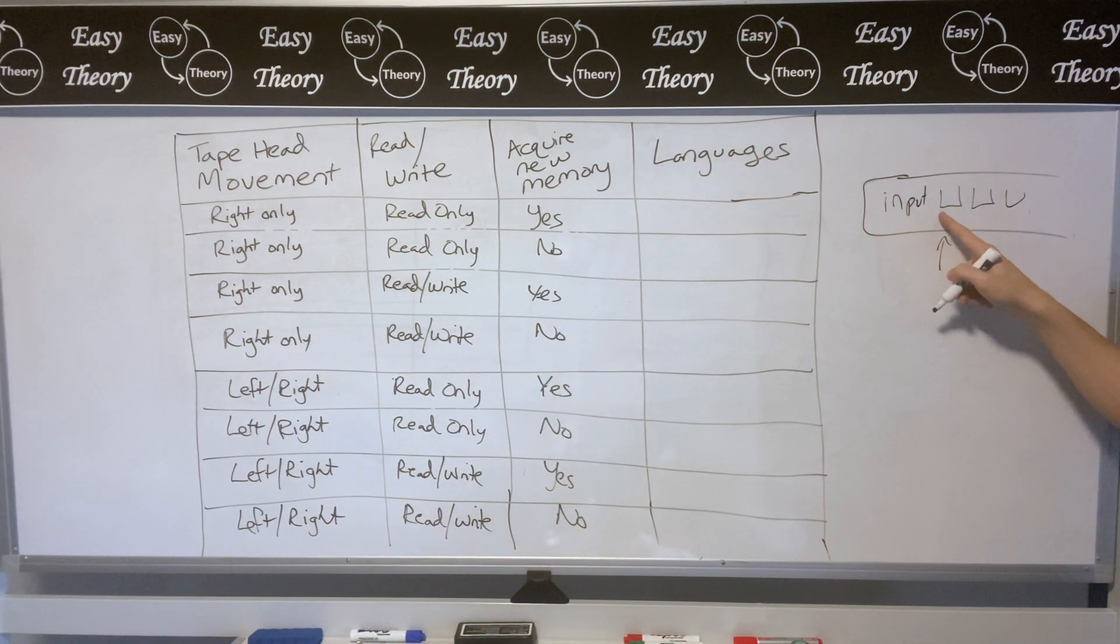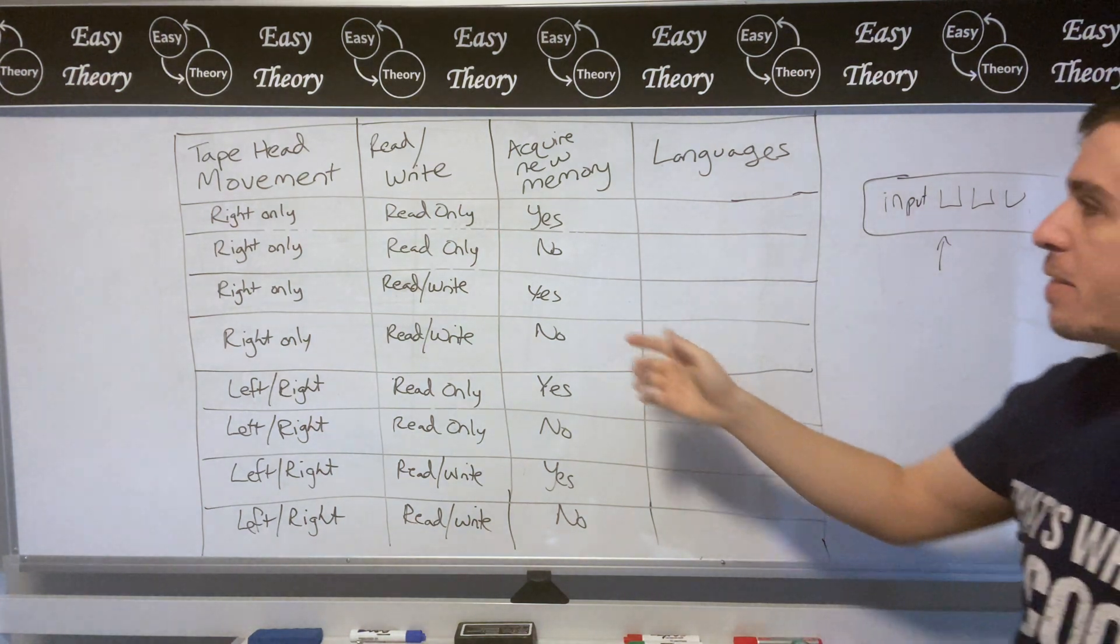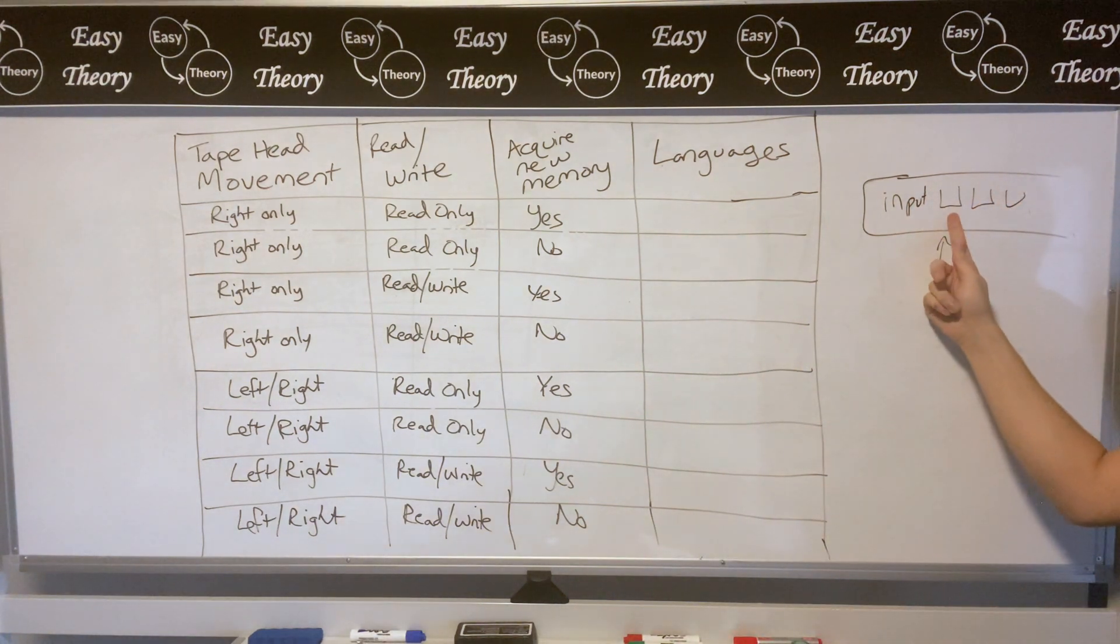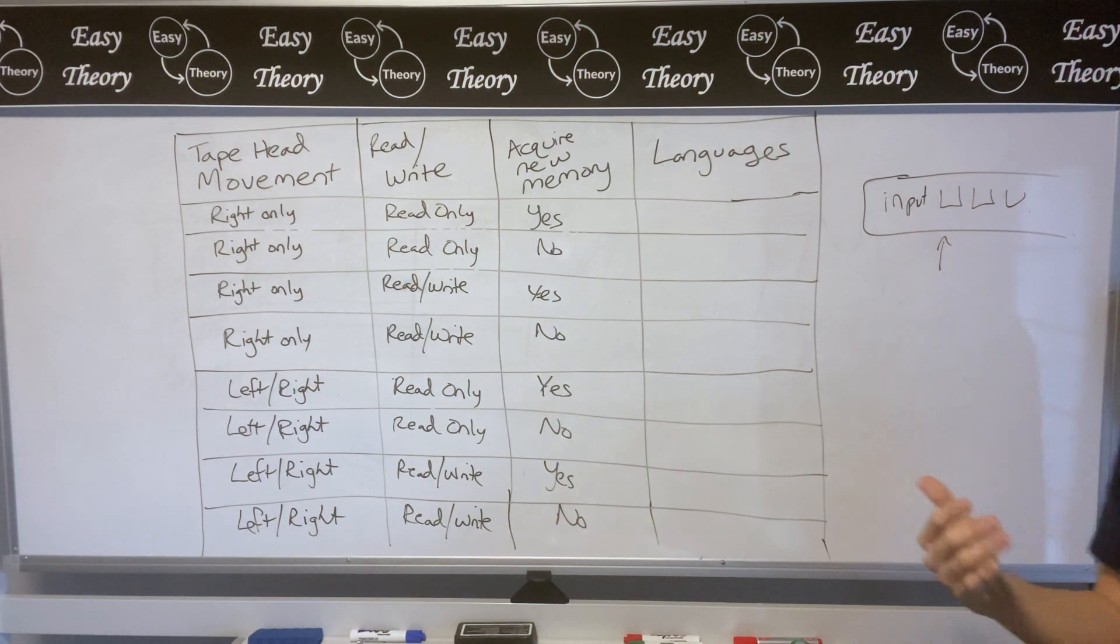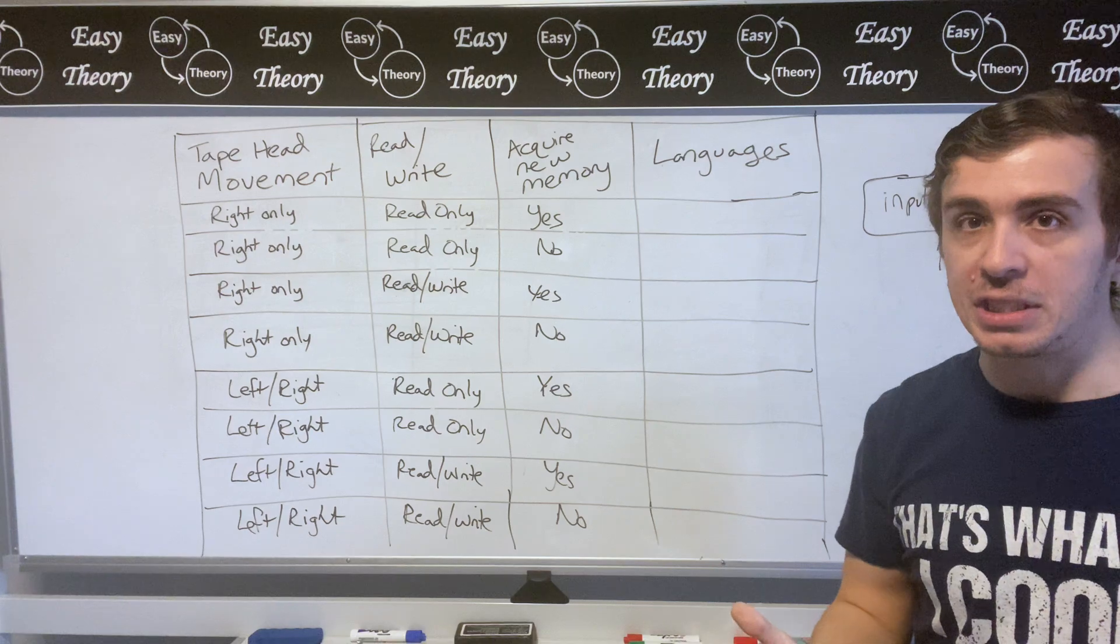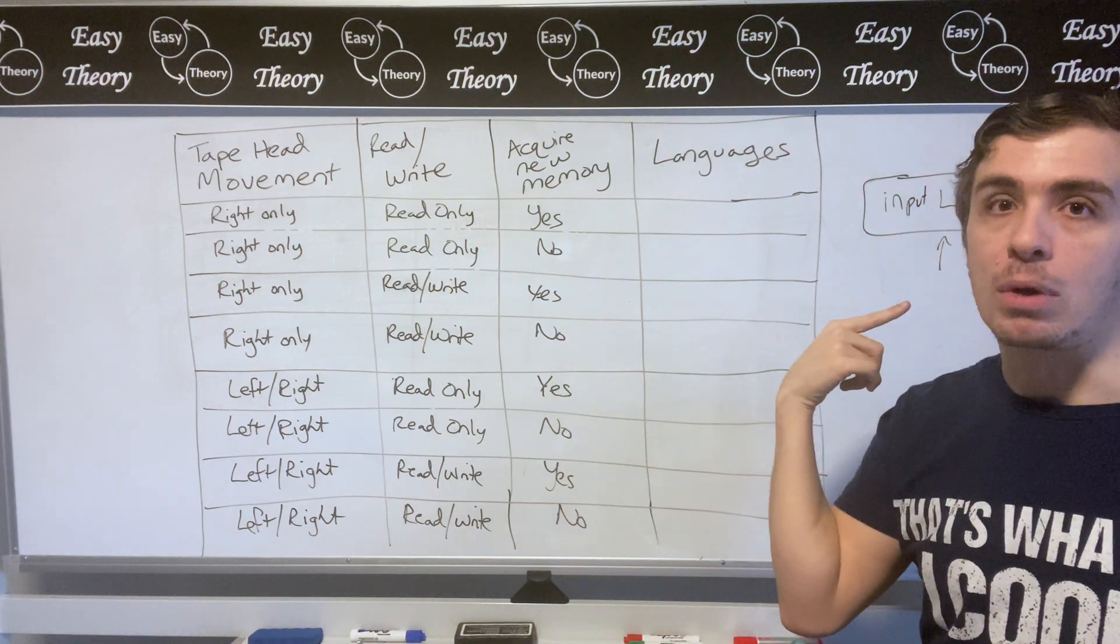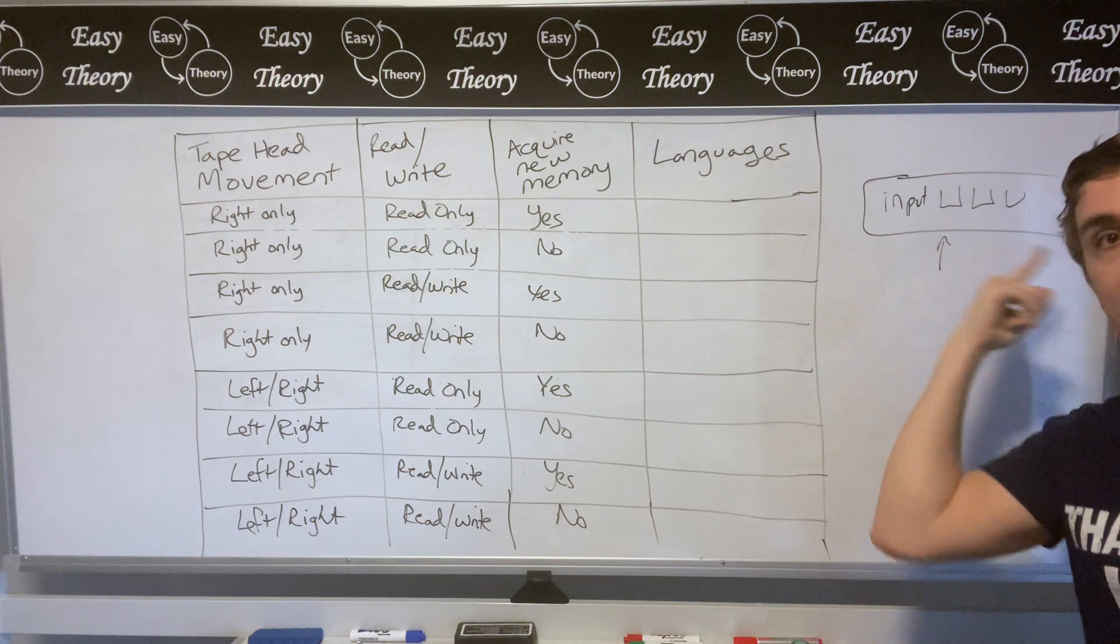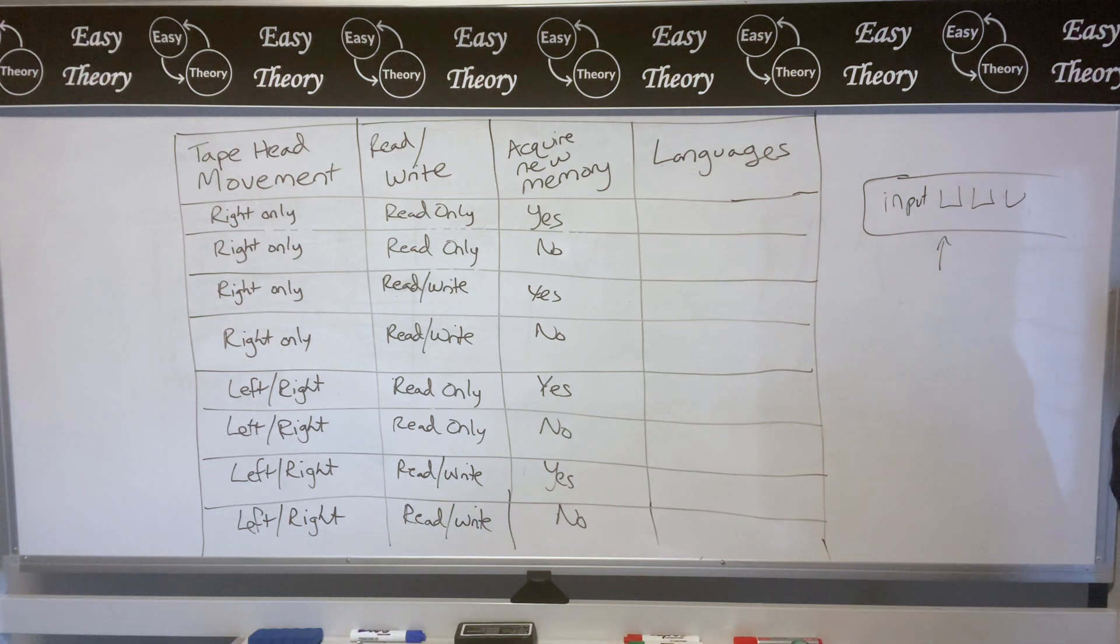So acquiring new memory will involve taking some of these cells over here. So we have the input string here and then looking at new cells over here. But if we think about this, if the machine's only moving right then once we hit here then it's going to continue on forever in this way. So therefore once we have reached here we can either say we're going to have the machine stop or we're going to have the machine run forever, in which case we know exactly what its behavior is going to be because all of the acquired new memory is always going to be blank.